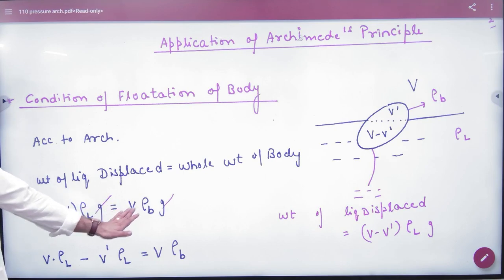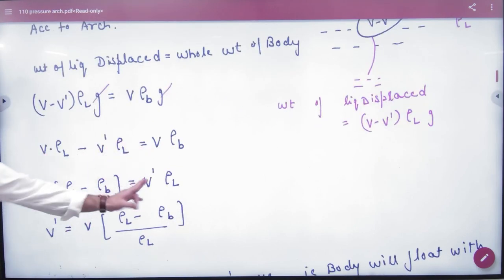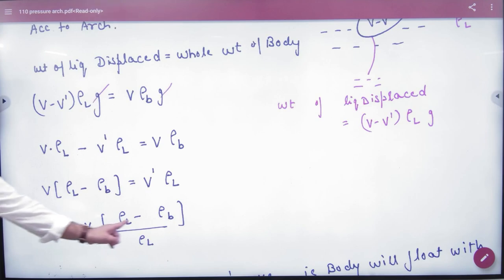This must be equal to whole weight of the body. Whole weight of the body, volume of body, density of body ρB into G. G cancels. Divide by V on both sides. What is V'?